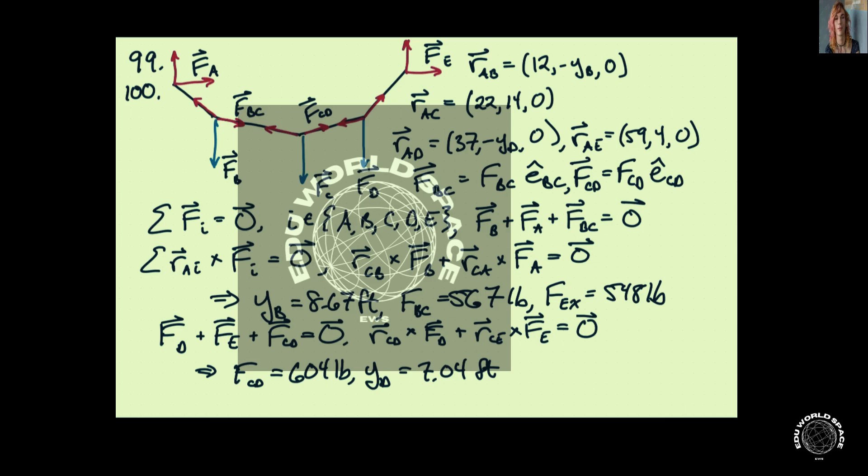Now to find the distance, the horizontal distance below the origin of point D, we can take a look at this substructure. Force balances will give us two equations, moment balances will give us another equation, and then we can combine that with the equations for the entire structure.